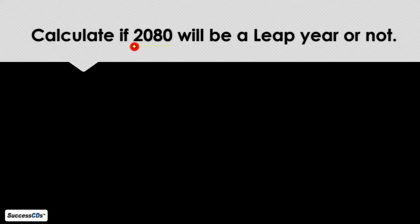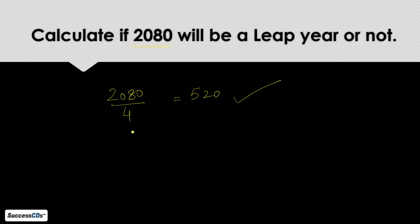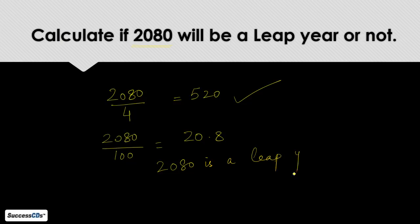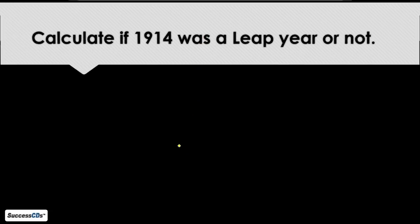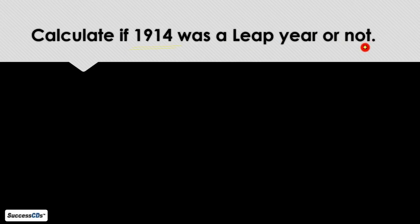Now let us see some examples. We have to calculate if 2080 will be a leap year or not. Step 1: Divide 2080 by 4 — we get 520, so it is exactly divisible by 4. We follow Step 2: divide 2080 by 100 — it is not exactly divisible, we get 20.8. So 2080 is a leap year, falling into the first category: divisible by 4 but not by 100.